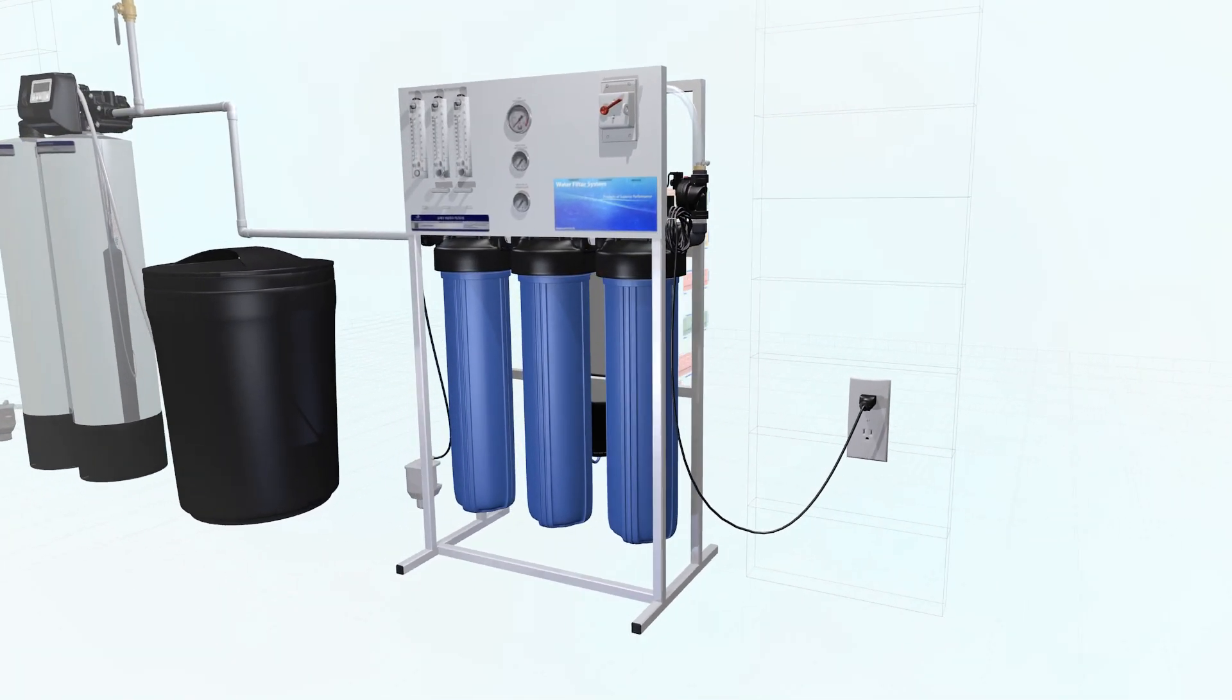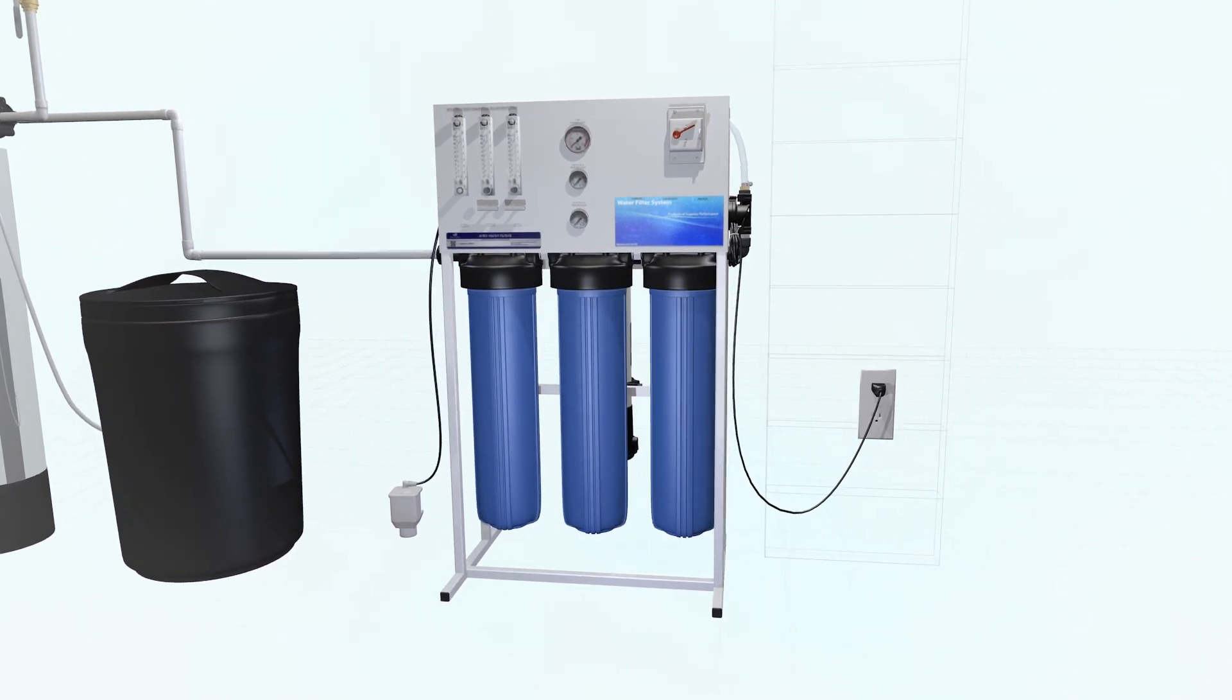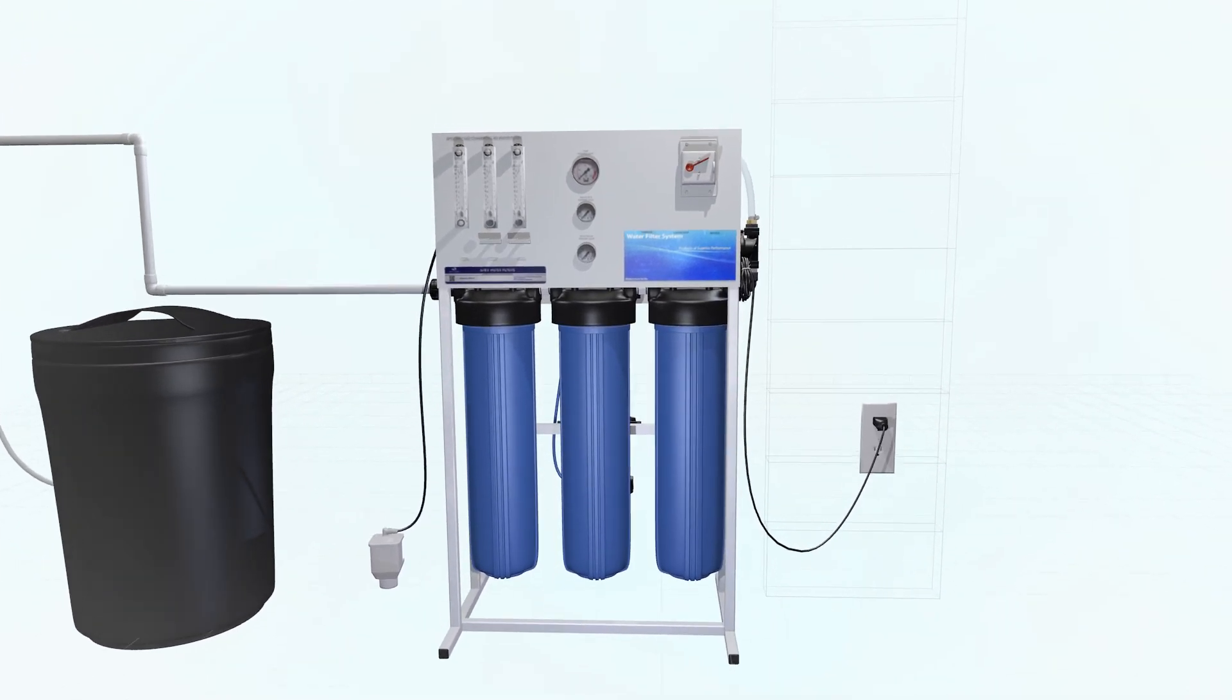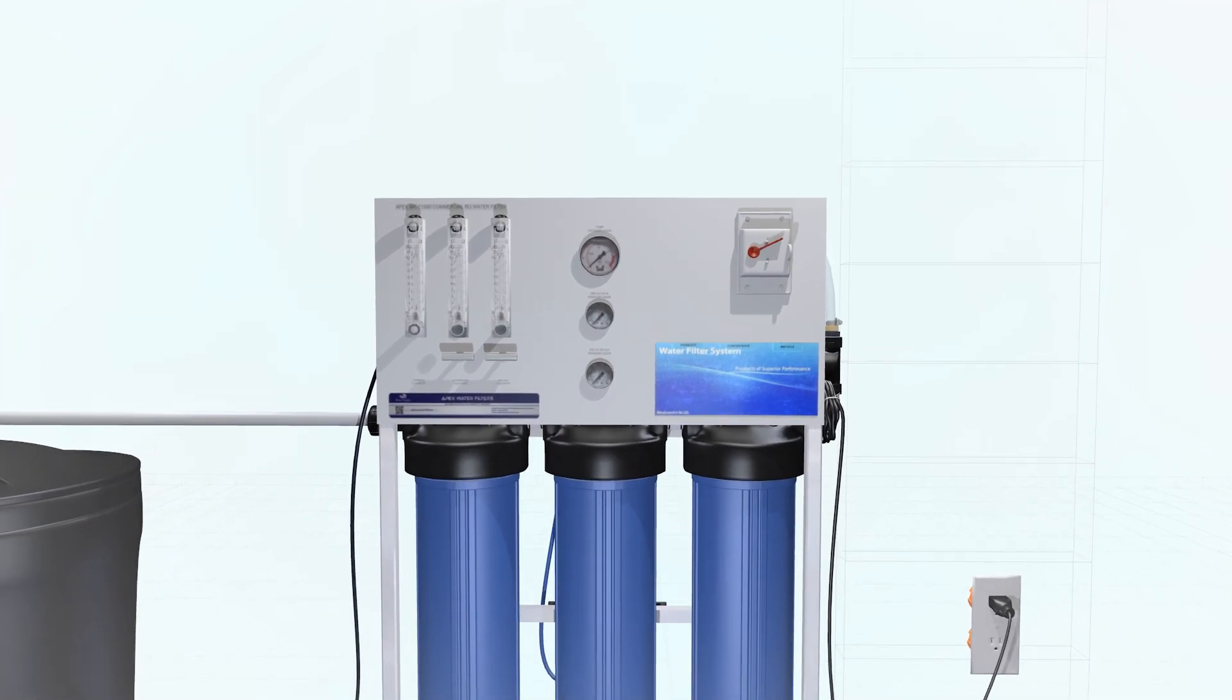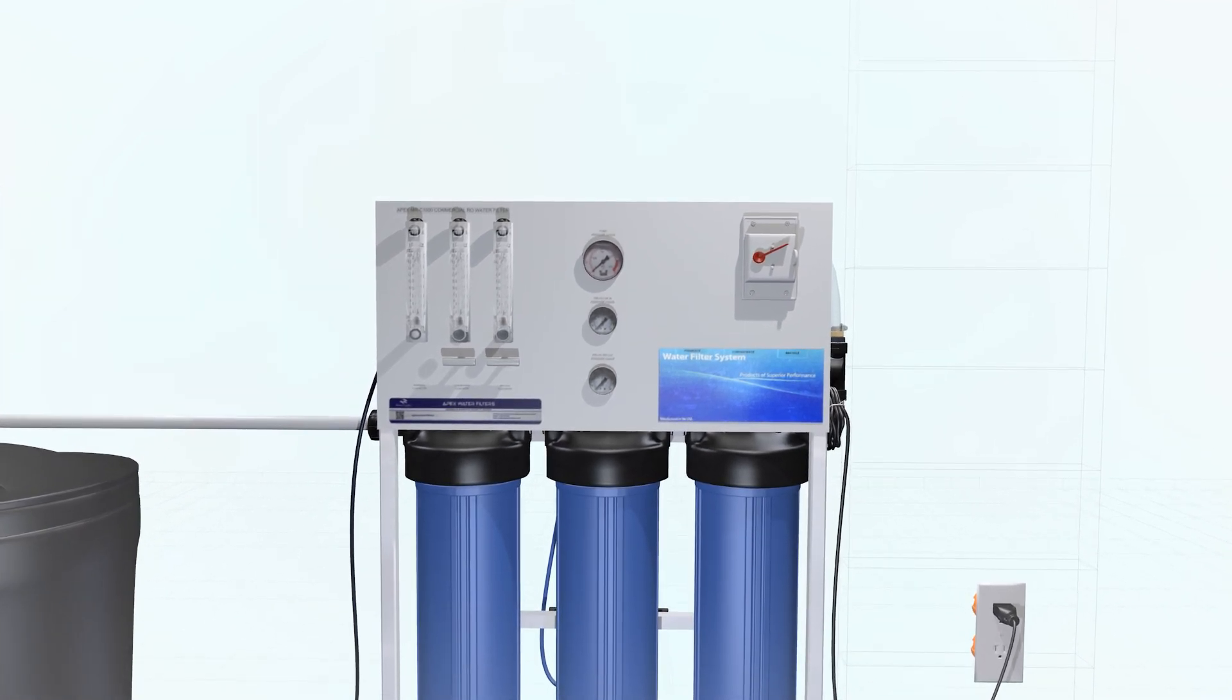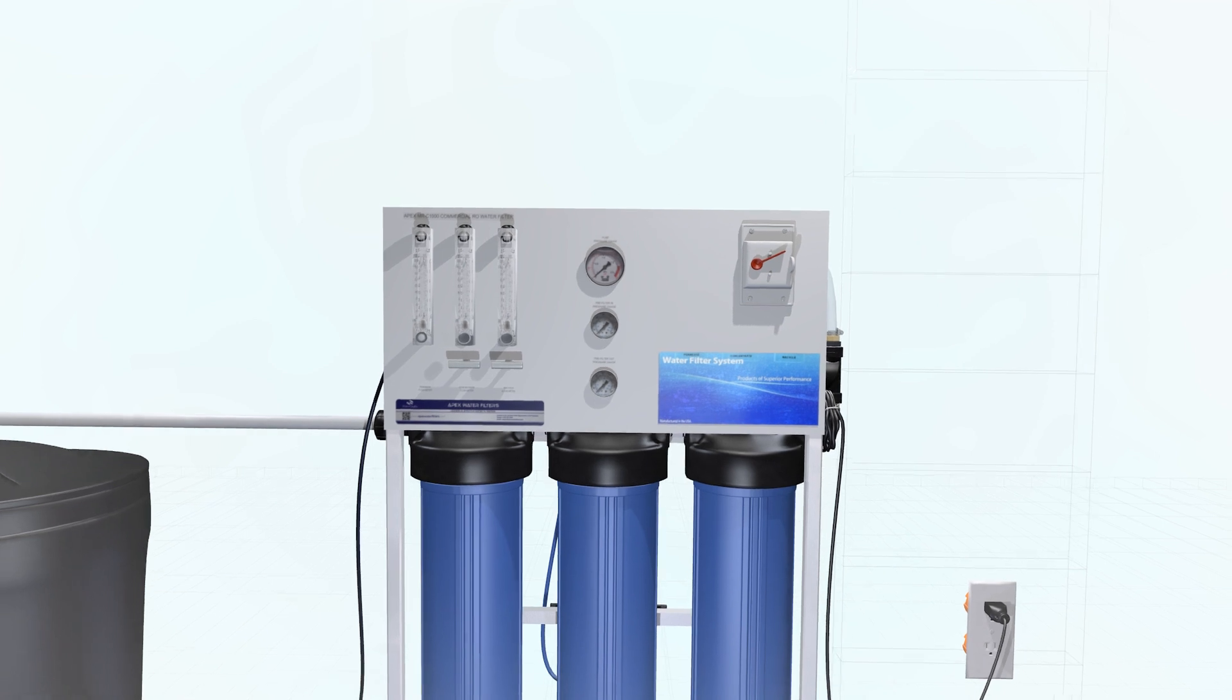The system should be plumbed according to local codes. The panel mounted pressure gauges and flow meters provide at-a-glance status of the system. A simple TDS meter can be used to verify the MRC's performance.